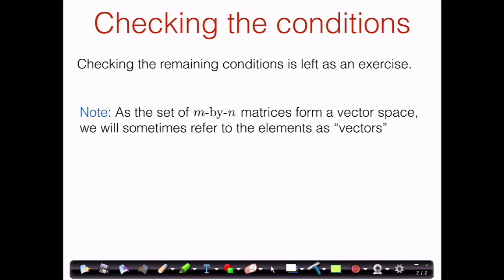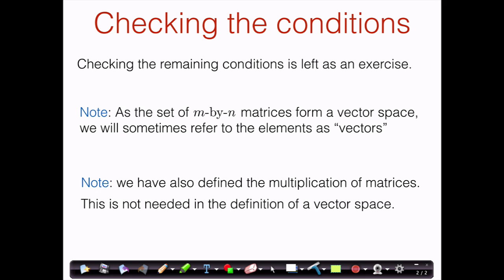A couple of things to note before we move on. Since the set of m by n matrices forms a vector space, we're sometimes going to refer to elements of this vector space as vectors — meaning we'll refer to matrices as vectors, so don't let this confuse you. Also note that we've defined multiplication of matrices, but that's not involved in the definition of a vector space. A vector space is only concerned with taking linear combinations, so we don't need to verify anything about matrix multiplication when checking the definition.